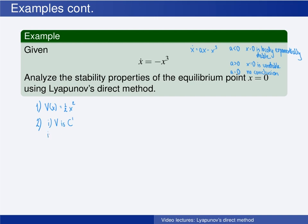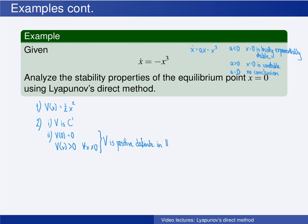The second condition is that the function is positive definite in some domain D about the origin. V evaluated at the origin is clearly zero, and V is strictly positive regardless of the value of x. So V(x) is strictly positive for all x not equal to zero. In other words, V is positive definite in the domain D being the whole state space.